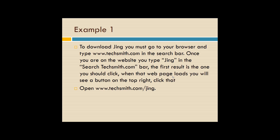Be clear and concise — the words 'Open www.techsmith.com/jing' tell you everything the preceding six lines tell you. Today we can assume that people know this opens in a web browser — we don't have to tell them to open Chrome, Internet Explorer, Firefox, or Safari. Just write it that way. But know your audience — if you're writing this for 90-year-olds, you might have to be more explicit about where that URL actually goes.